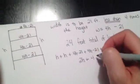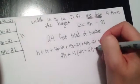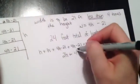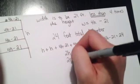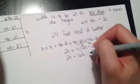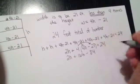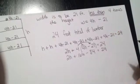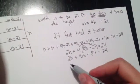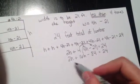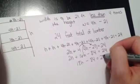So I'm going to say 4 times (4H minus 21) equals 24. Then I distribute my 4 to both terms. So I get 2H plus 16H. 4 times negative 21 would be negative 84, equals 24. Then I combine my like terms. So I have 18H minus 84 equals 24.